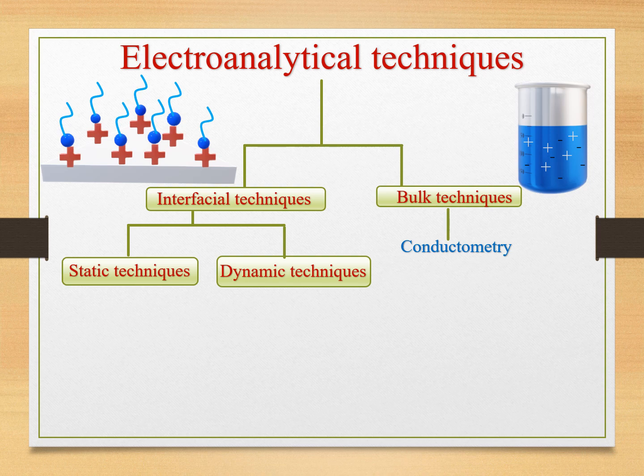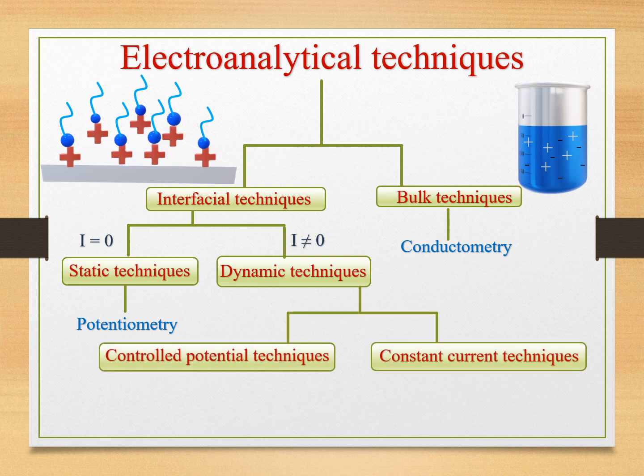In static techniques, there is no current flow, whereas in dynamic techniques, there is current flow. Static techniques do not have redox reactions, whereas in dynamic techniques, we generate the redox reaction. An example of static techniques is potentiometry. In the dynamic case, we can further classify them as two: controlled potential technique and constant current techniques.